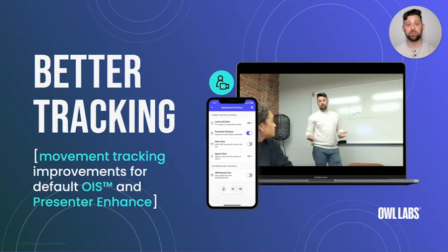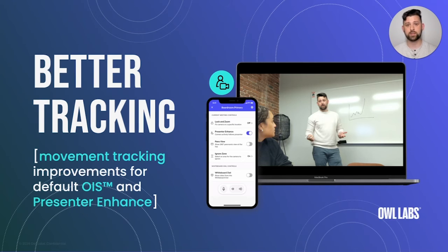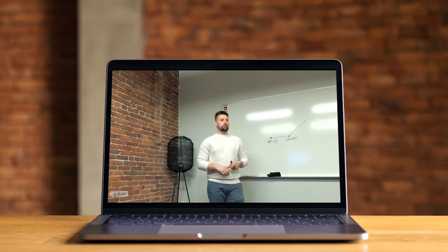The Owl Intelligence System uses AI, leveraging sound and motion from people in the room to intelligently highlight active meeting participants on screen during a meeting. In its default mode, the Owl Intelligence System learns where people are located in the room to improve its performance throughout the meeting. This means that movement around the room can cause a few second delay in highlighting someone on screen, like if a new person sits at the table or someone gets up and moves to another location. Because of this, our default Owl Intelligence System behavior is best for sit-down, discussion-based meetings.